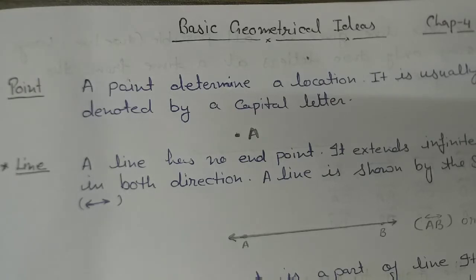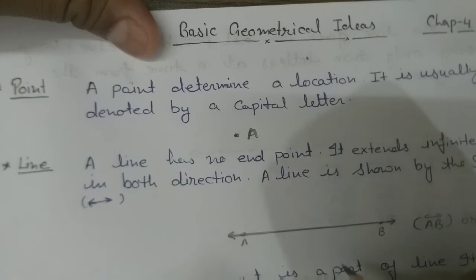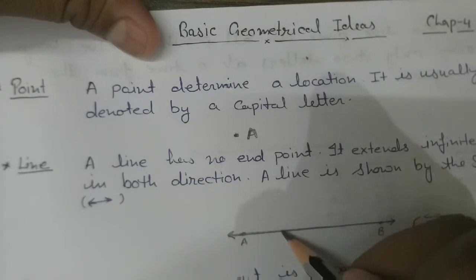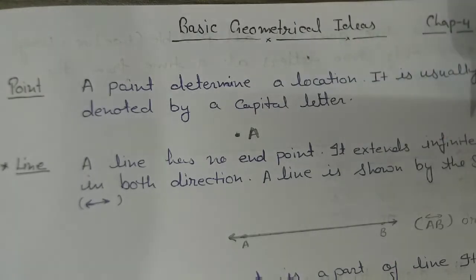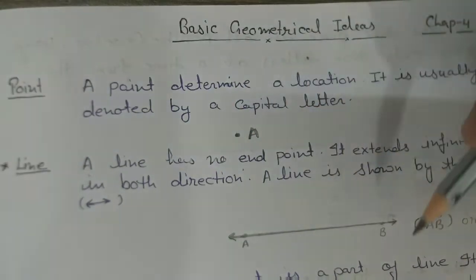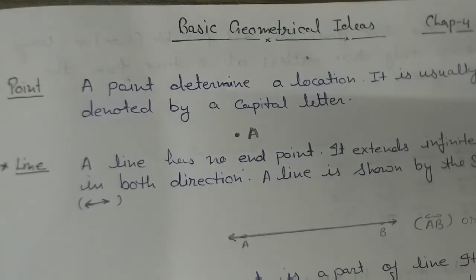Now the second definition is line. A line has no end point. A line has uncountable points but no end point. This diagram has uncountable points. It has no end point because it extends infinitely in both directions — it continues.